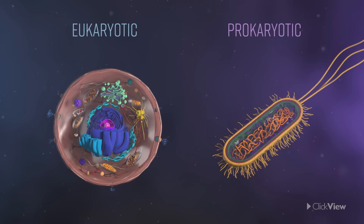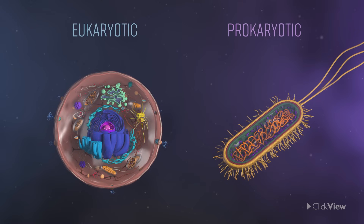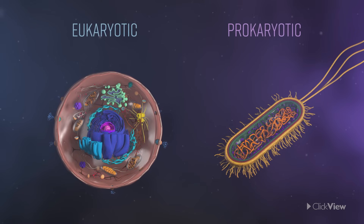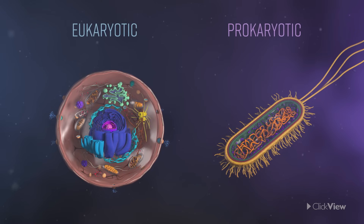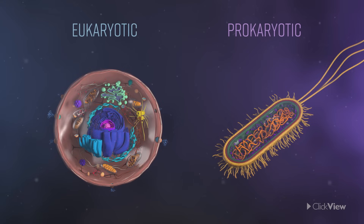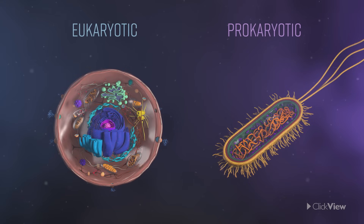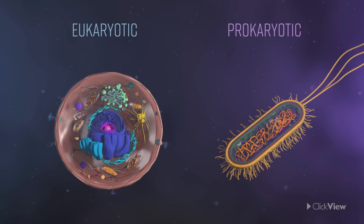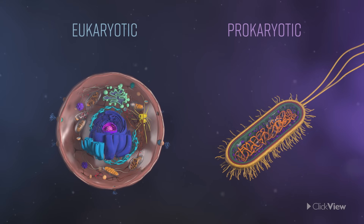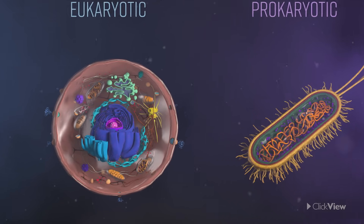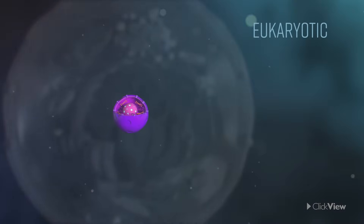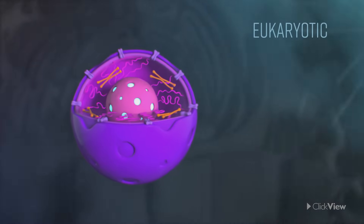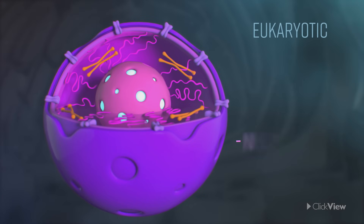The broadest classification of cells is into two groups: eukaryotic and prokaryotic. There are a number of differences between these two types of cells. The main difference is that eukaryotic cells have a double membrane-bound nucleus, which contains the cell's DNA.